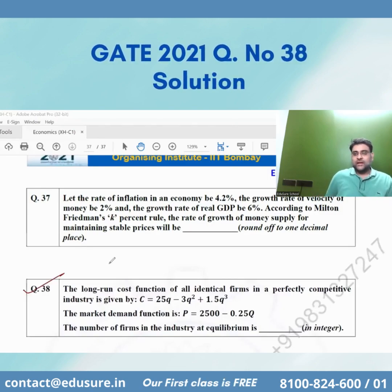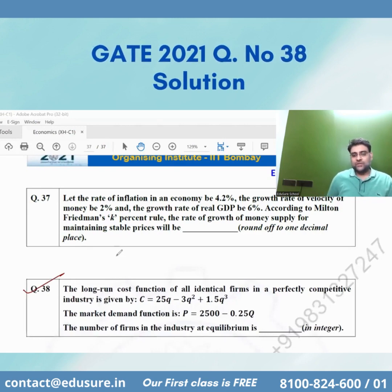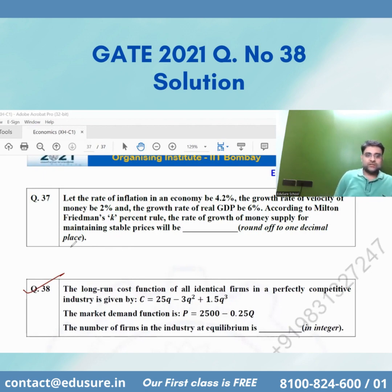Question number 38, IIT GATE 2021. The long run cost function of all identical firms in a perfectly competitive industry is given. The market demand function is also given. So the long run cost function is basically this.